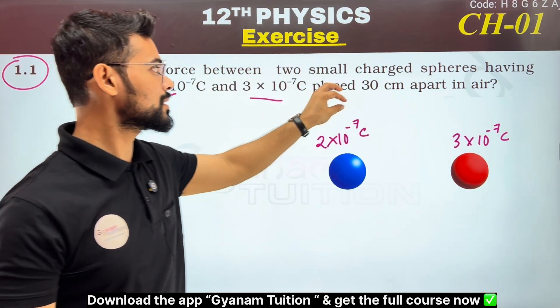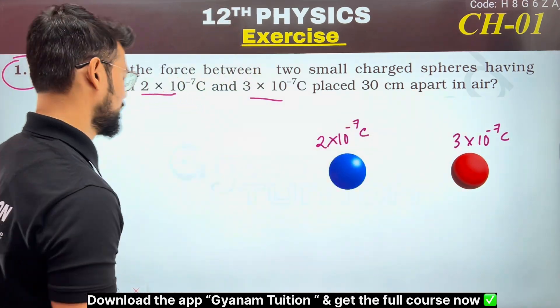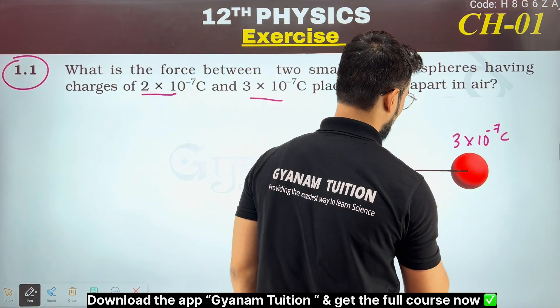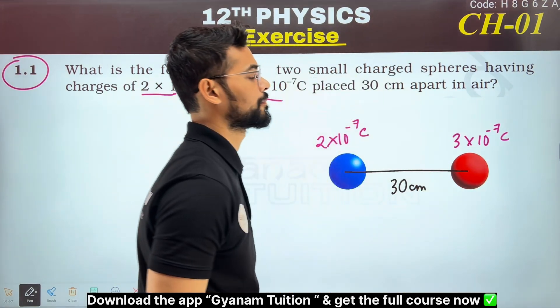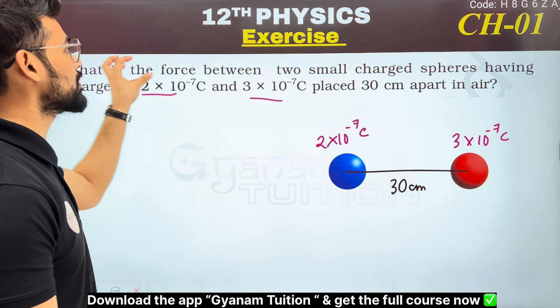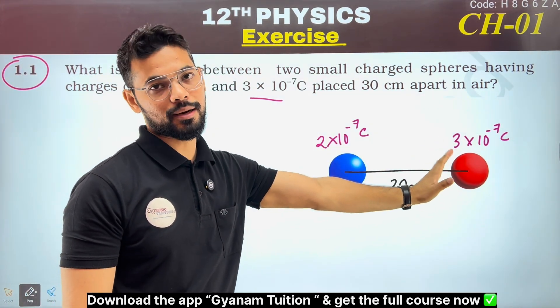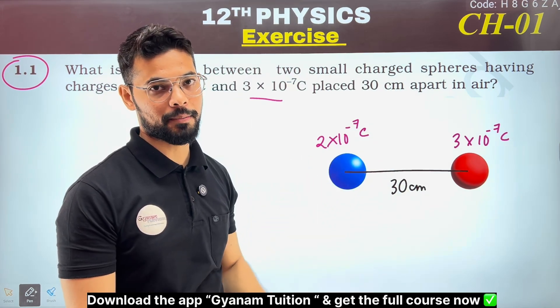They are placed 30 centimeters apart in air. The distance is measured center to center between them. What is the force between them? The force we need to find is the electrostatic repulsive force using Coulomb's law.